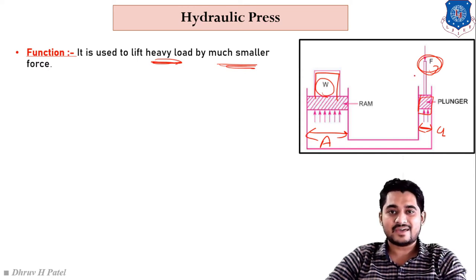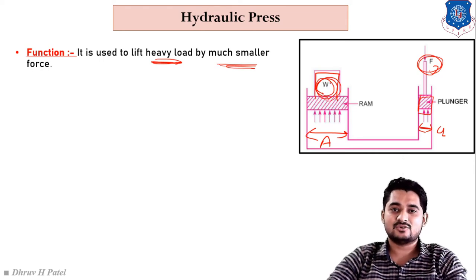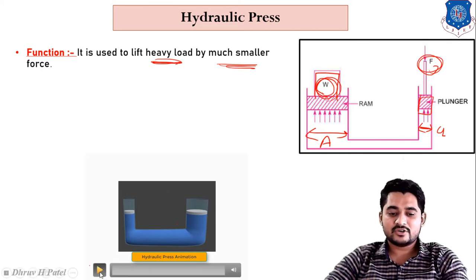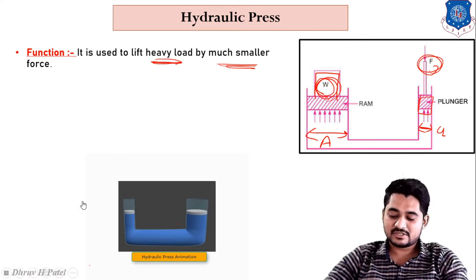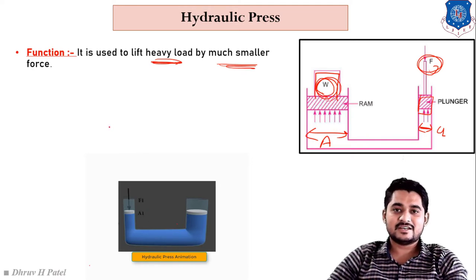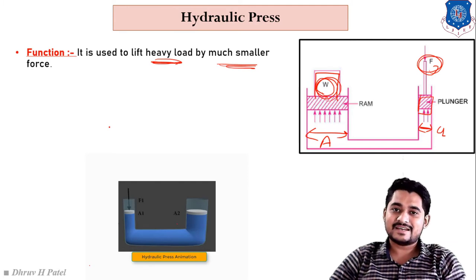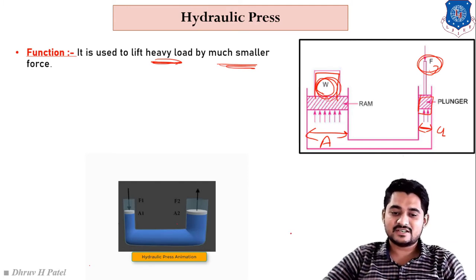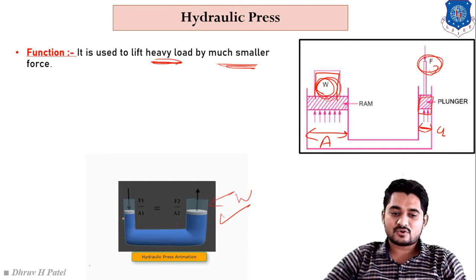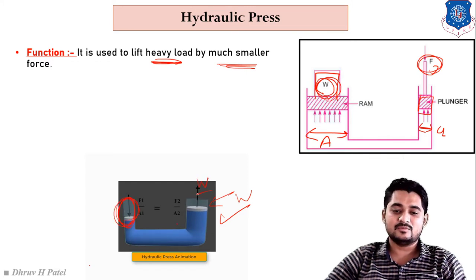In this machine we use small effort F and lift much higher force W — that is the hydraulic press. According to the animation, on the left-hand side small cross-sectional area A1 with force F1, and on the right-hand side larger cross-sectional area A2 with force F2, where we can place weight W.